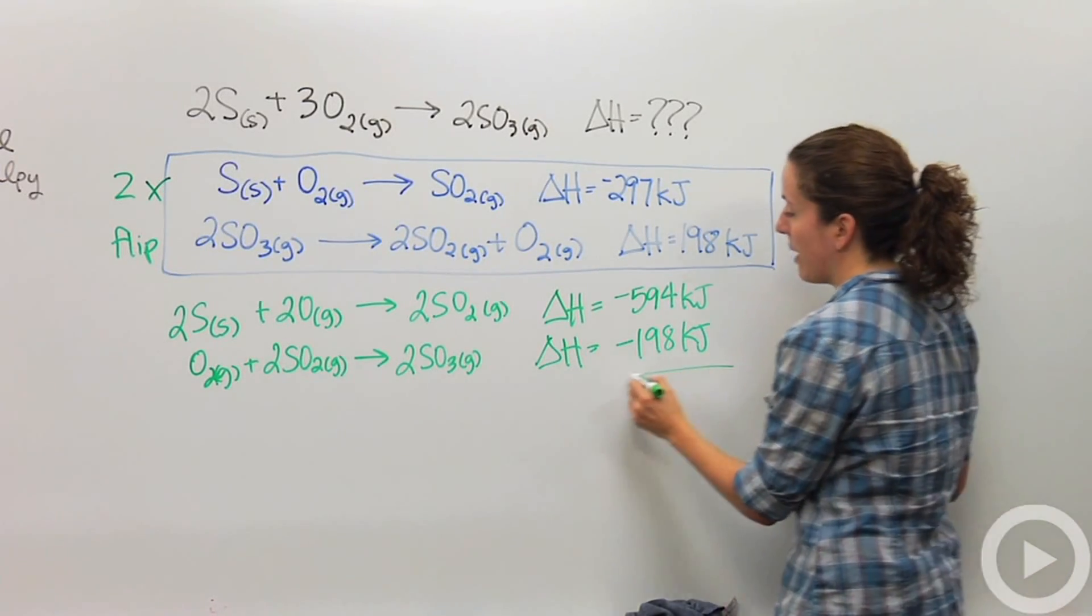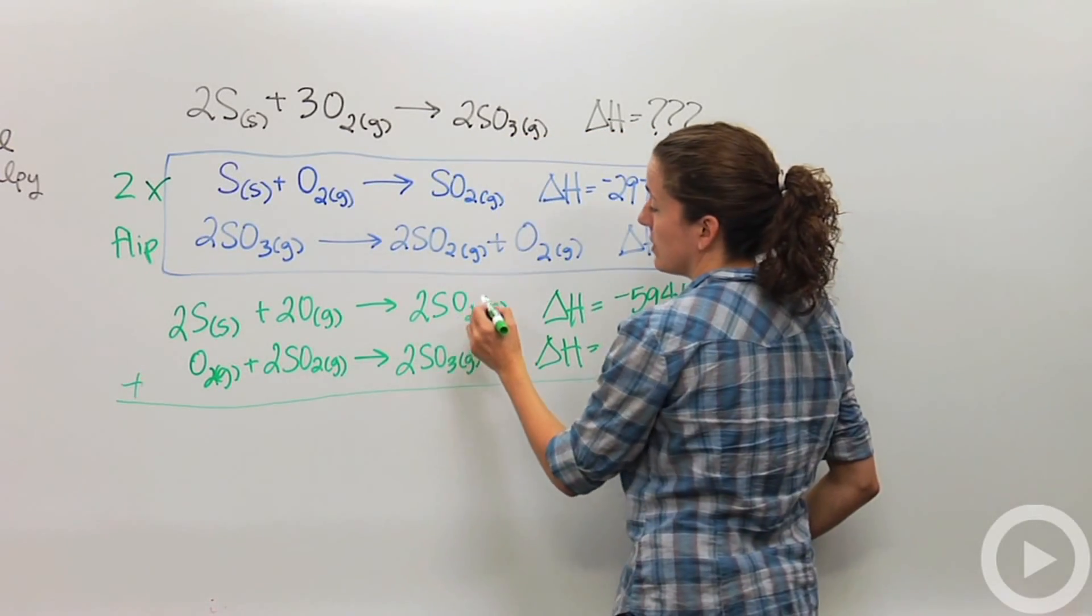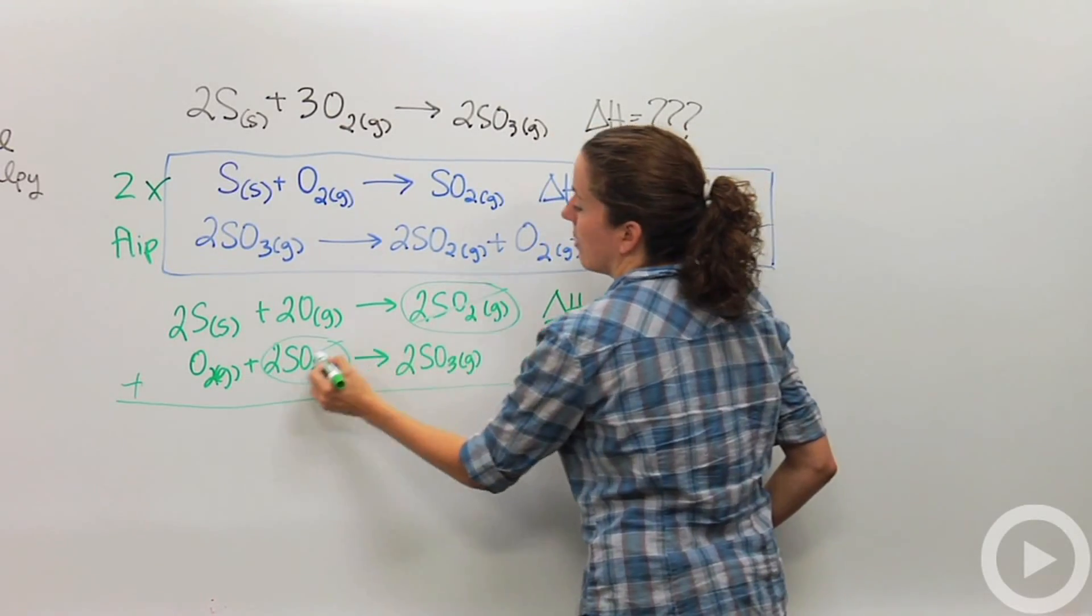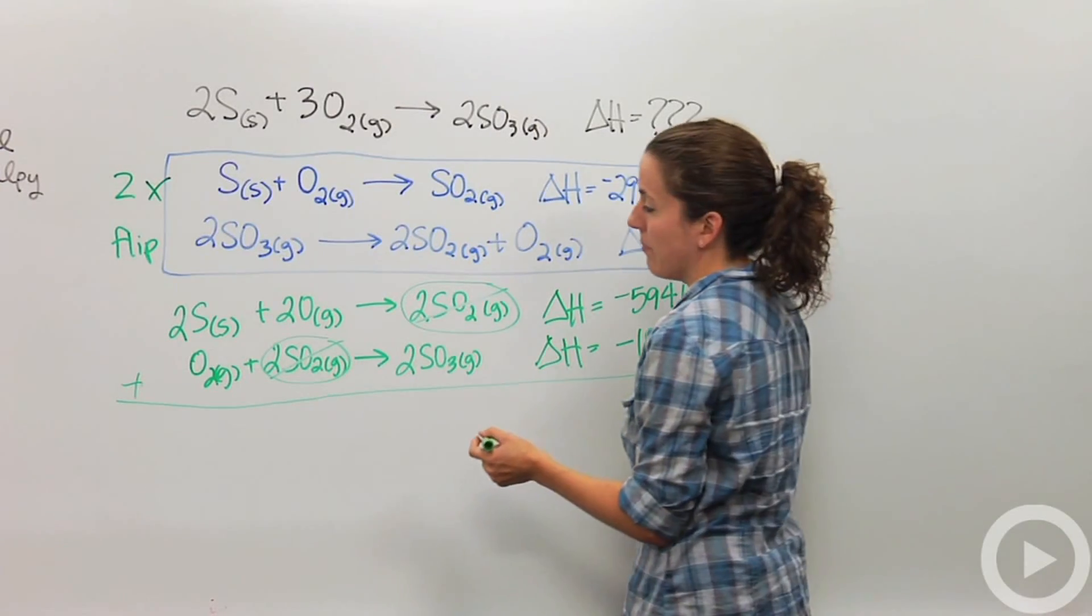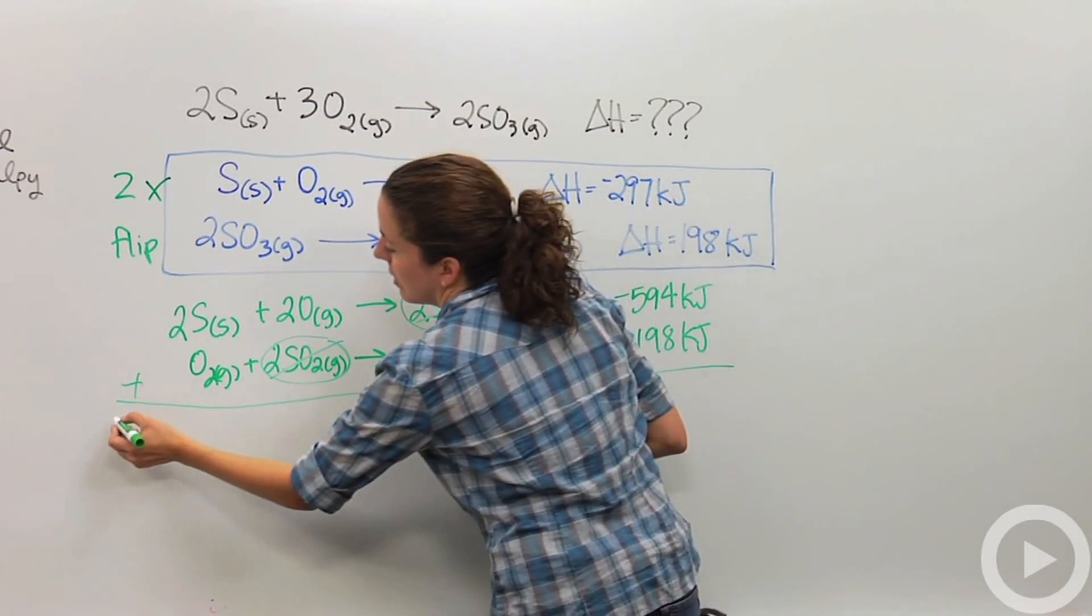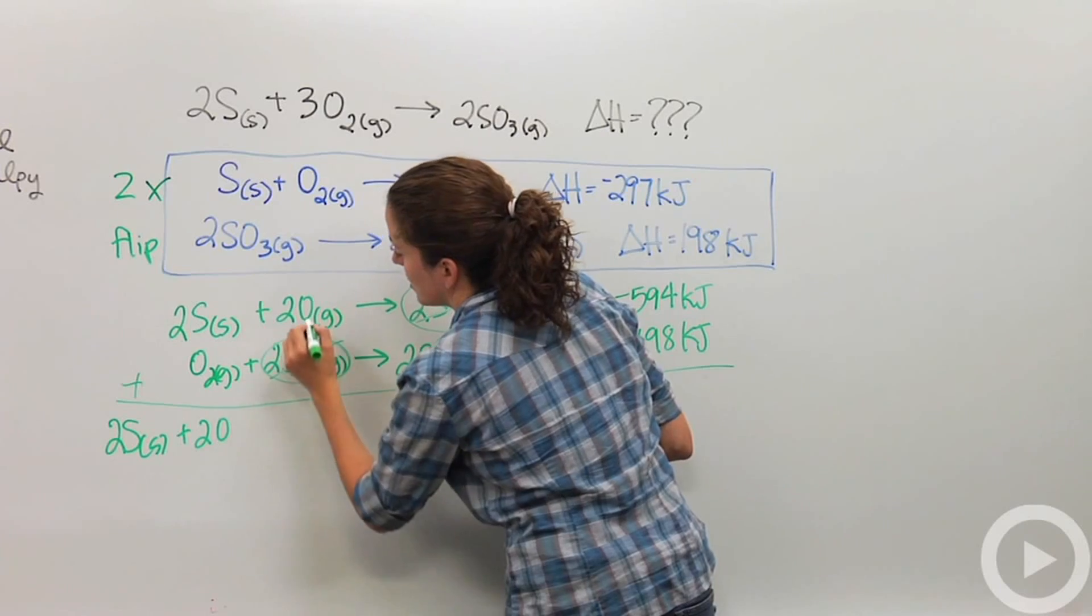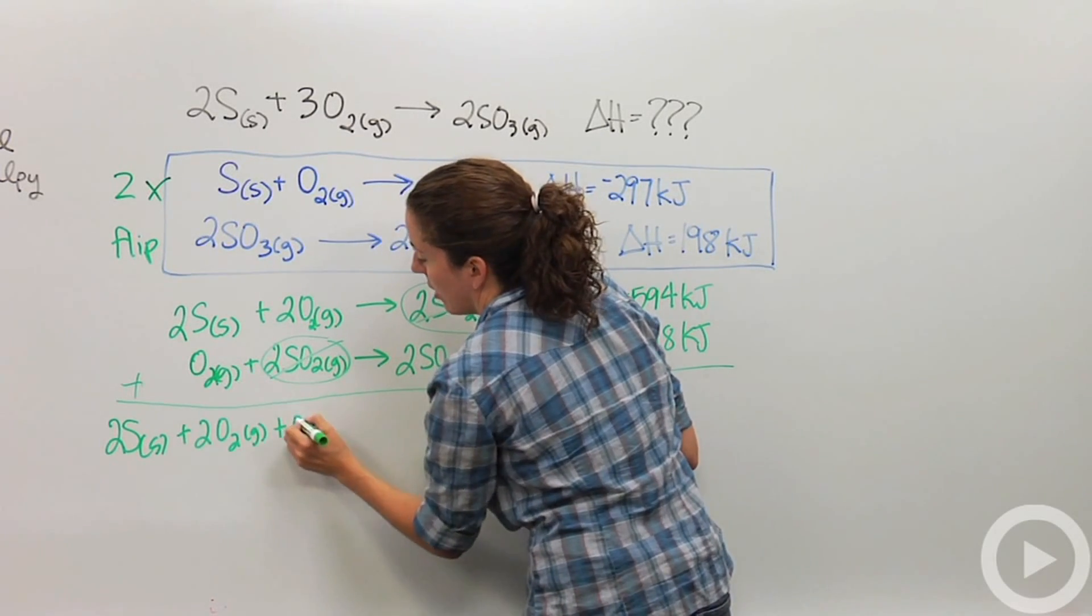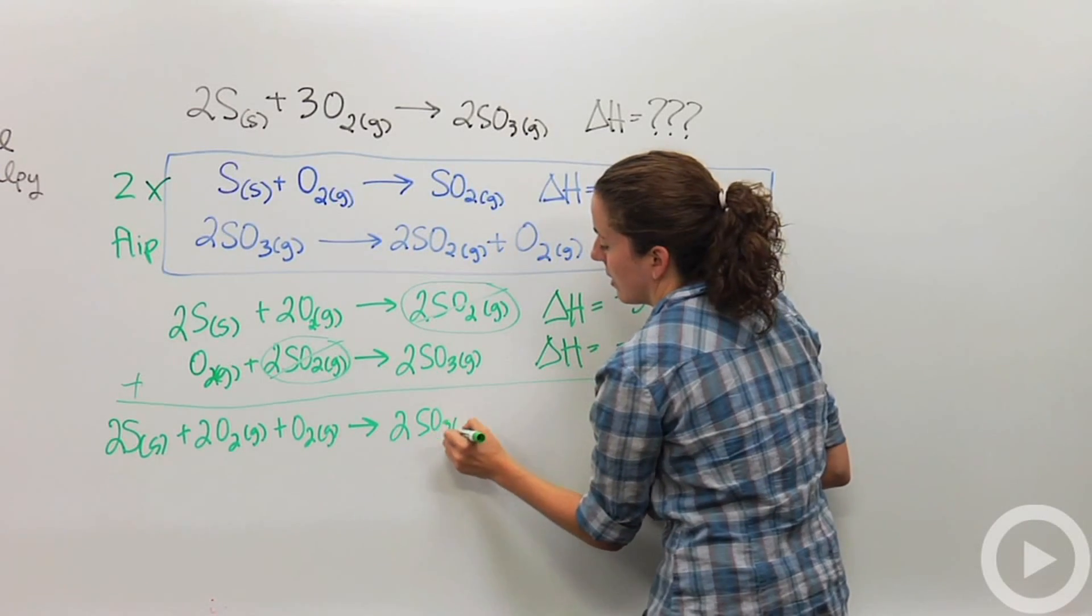So let's make sure this works. So if I were to add these two reactions together, note that I have two moles of sulfur dioxide here and two moles of sulfur dioxide here. I can cross those out because this is a product and this is a reactant. And now if I add everything up, nothing else crosses out so I'm going to add everything up. So I have two moles of sulfur solid plus two moles of oxygen, this should be oxygen 2, sorry, O2 gas plus another mole of O2 gas yields two moles of SO3 gas.